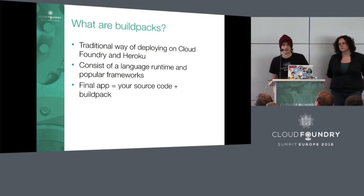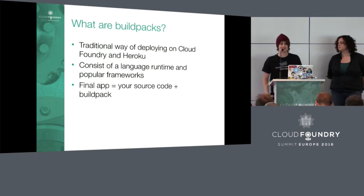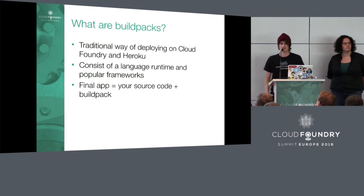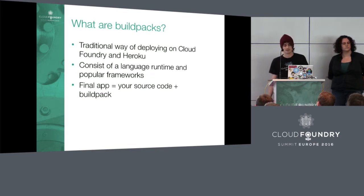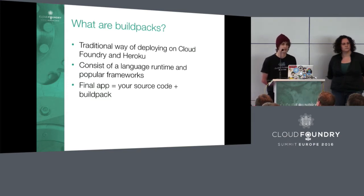First, we'll look at Buildpacks — the traditional way of deploying applications to Cloud Foundry. They were popularized by Heroku. A Buildpack is essentially a zip file with three scripts: a detect, a compile, and a release. It takes a language runtime, dependencies, and your source code and produces an executable thing we call a droplet. Buildpack apps are your source code combined with the Buildpack, and they just run on Cloud Foundry.